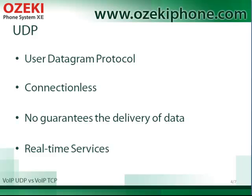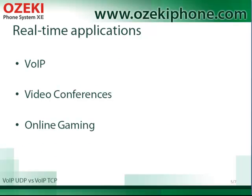With TCP, delays would happen every time there is an error like packet loss. Real-time services do not require a completely reliable transport layer protocol, so they use the UDP protocol. A real-time application can be VoIP calls, videoconferences, or online games.